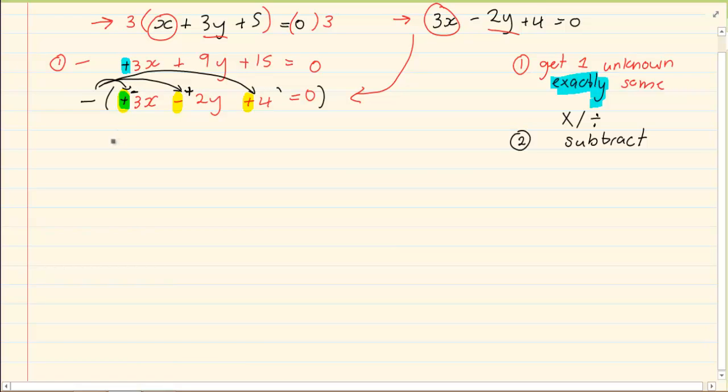Now let's rewrite this. On the top we have 3x plus 9y plus 15 is equal to 0. And at the bottom we have negative 3x, positive 2y. Remembering that every sign changes. Negative 4 is equal to 0. Now if we take the top equation, subtract the bottom equation, look at what we have.